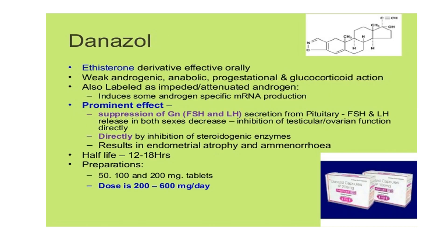The first drug is danazole. Danazole is an ethisterone derivative which is effective orally. It has weak androgenic, anabolic, and progesterone-like activity with some glucocorticoid action. In the textbook it comes under the progesterone or female sex hormones section. It is also labeled as impeded or attenuated androgens because it can induce some androgen-specific mRNA production.